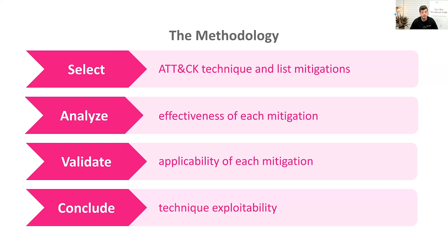The methodology has four steps. First, choose an attack technique — preferably one you feel you want to test first, or one where you don't have enough data sources or detective capabilities in place. Then, for each technique you choose, test how effective each mitigation is, because not all mitigations in the ATT&CK framework reduce the same attack vector. Some only reduce part of the attack surface or exploitability, while some truly mitigate the technique entirely.